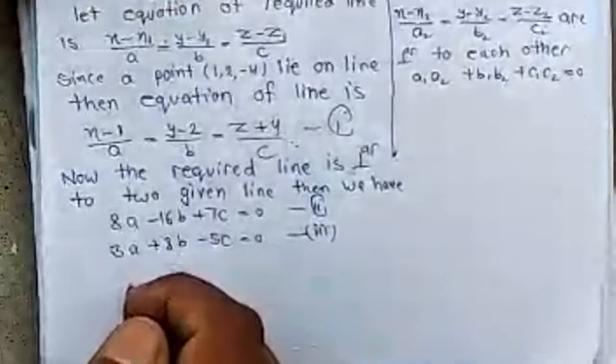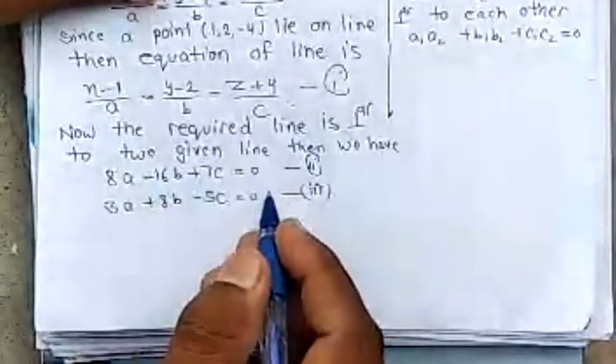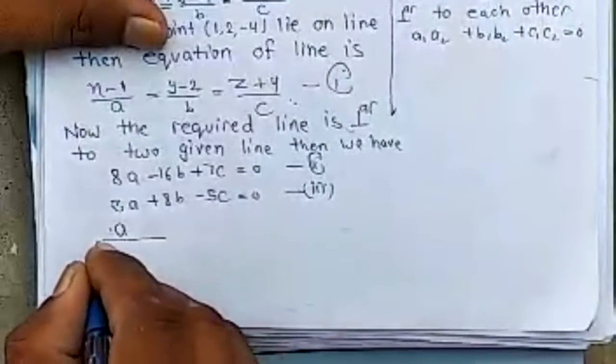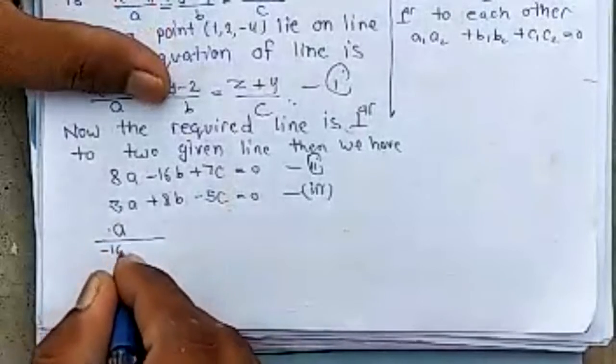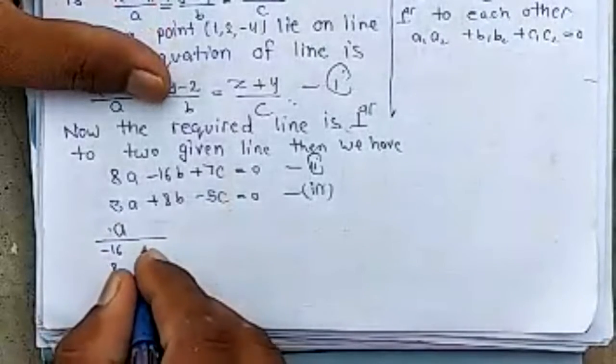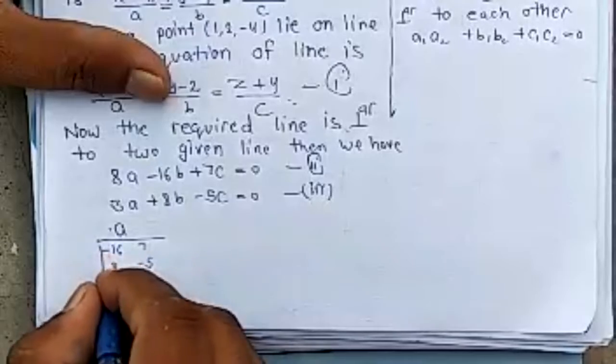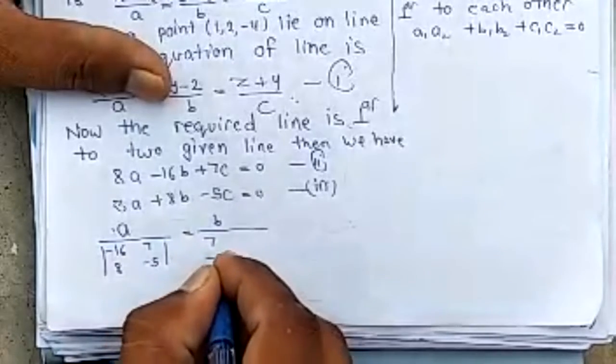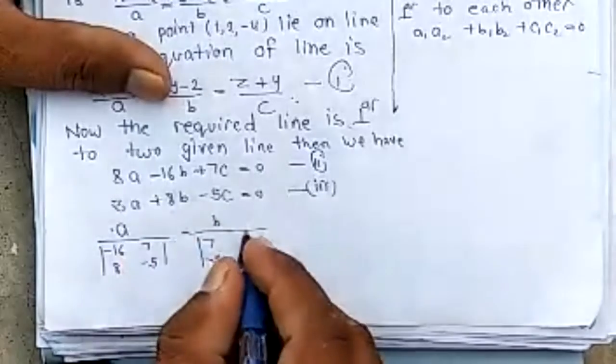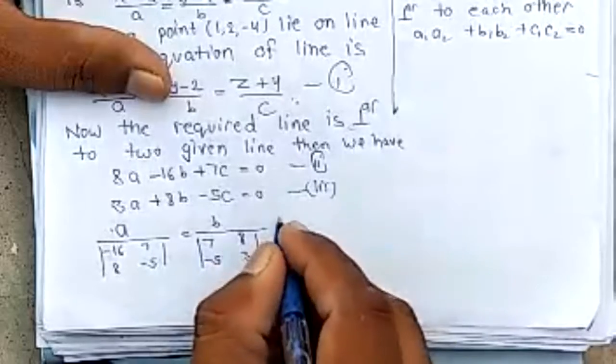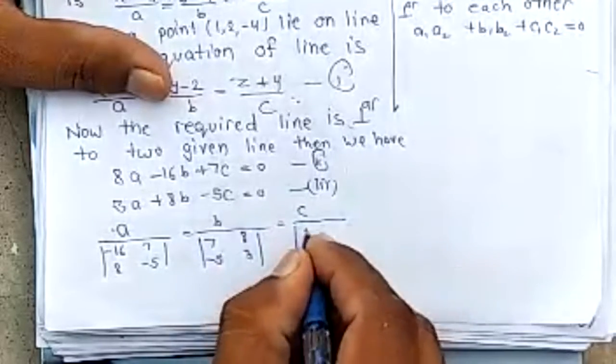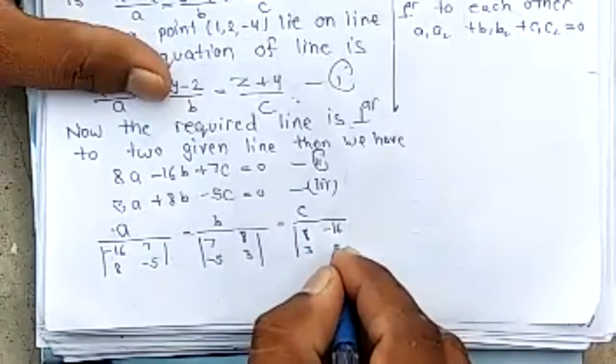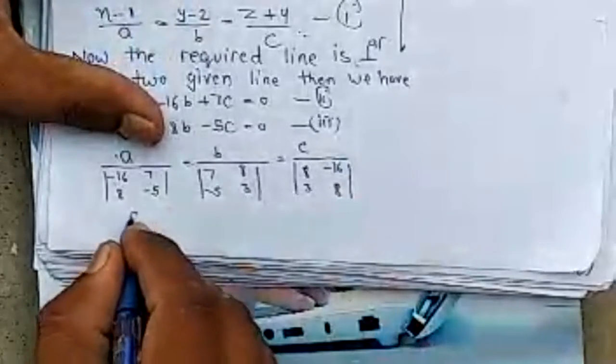We find the value of a, b, c from both these equations. Using cross multiplication method, a by (-16)(−5) − (8)(7), b by (7)(3) − (−5)(8), c by